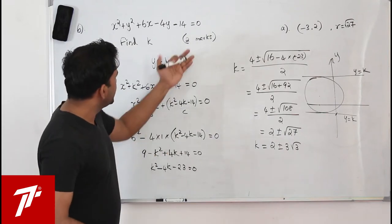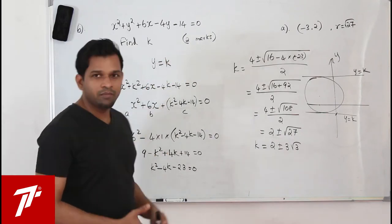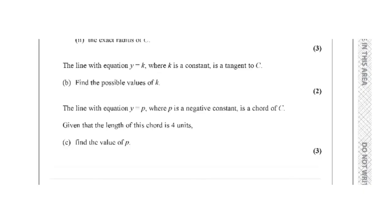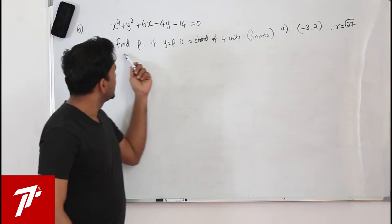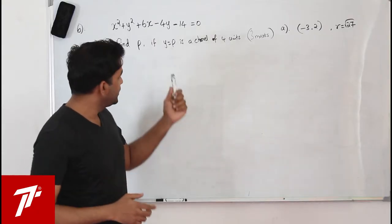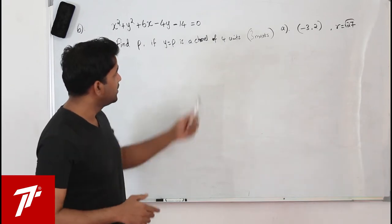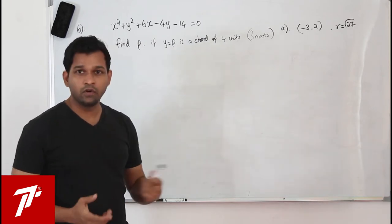Part C: the line y = p, where p is a negative constant, is a chord of circle C, and the length of the chord is four units. Find the value of p. This question has three marks. We need to find p given that y = p is a chord of length 4.